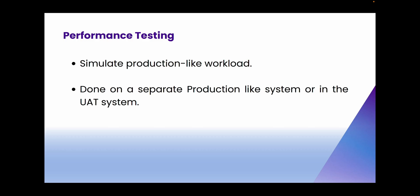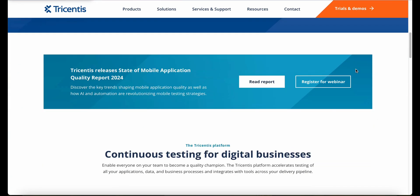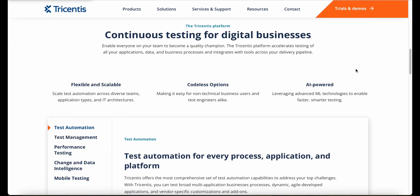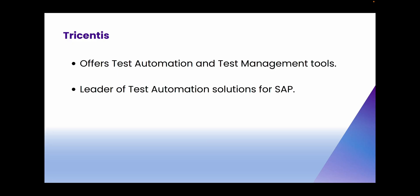All this testing done manually will take a long time and also be prone to issues and errors. To avoid that, SAP projects use test automation and test management products like Tricentis Tosca and Q-Test. Tricentis is a software testing company known for its tools and solutions designed to accelerate software testing processes. The company was founded in 2007 and has since become a leader in continuous testing and test automation, especially for SAP.